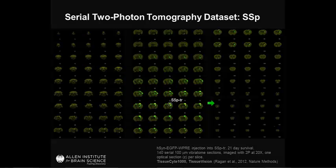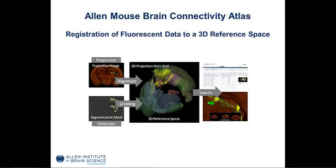What you get is 140 coronal sections with both the autofluorescence measured in the red channel as well as the GFP signal measured in the green channel. We take these two-dimensional images and process them through our informatics data processing pipeline, which includes image segmentation — an automated way to look for signal in the brain, subtract out the background, and register that signal into our three-dimensional reference space. Our reference atlas is also in this 3D space, so you can identify structures where you're seeing signal and understand the projections and topology of the brain.